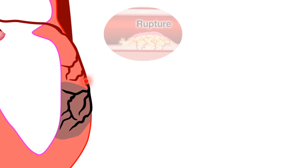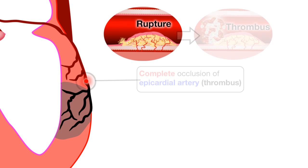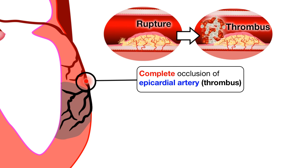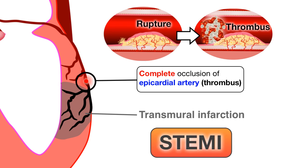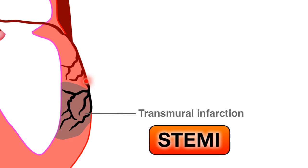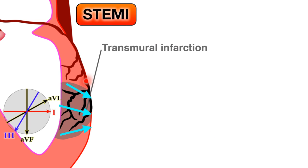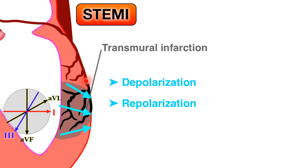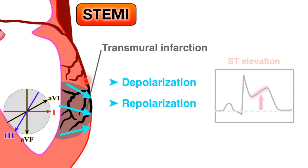An acute plaque rupture with total occlusion of the coronary artery and subsequent transmural infarction causes ST elevation myocardial infarction, or STEMI. It is characterized by ischemia and infarction with necrosis of the entire thickness of the myocardium. It may produce changes affecting both depolarization and repolarization with resultant ST elevation.